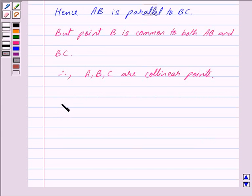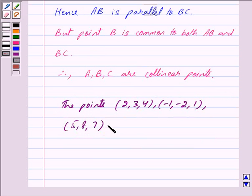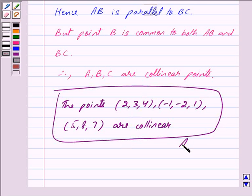Thus, the points (2, 3, 4), (-1, -2, 1), and (5, 8, 7) are collinear. This is our answer. Hope you have understood the solution. Bye and take care.